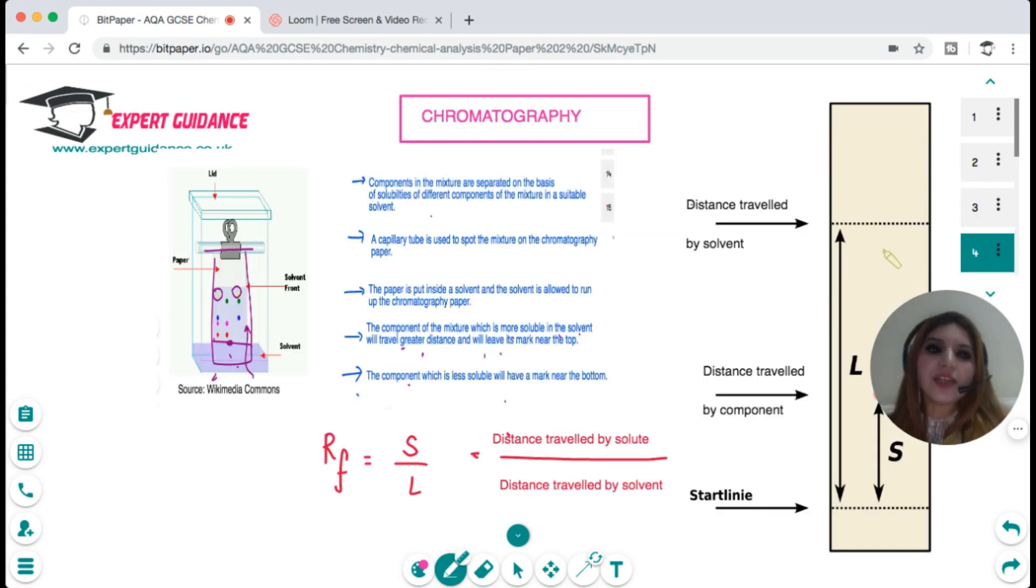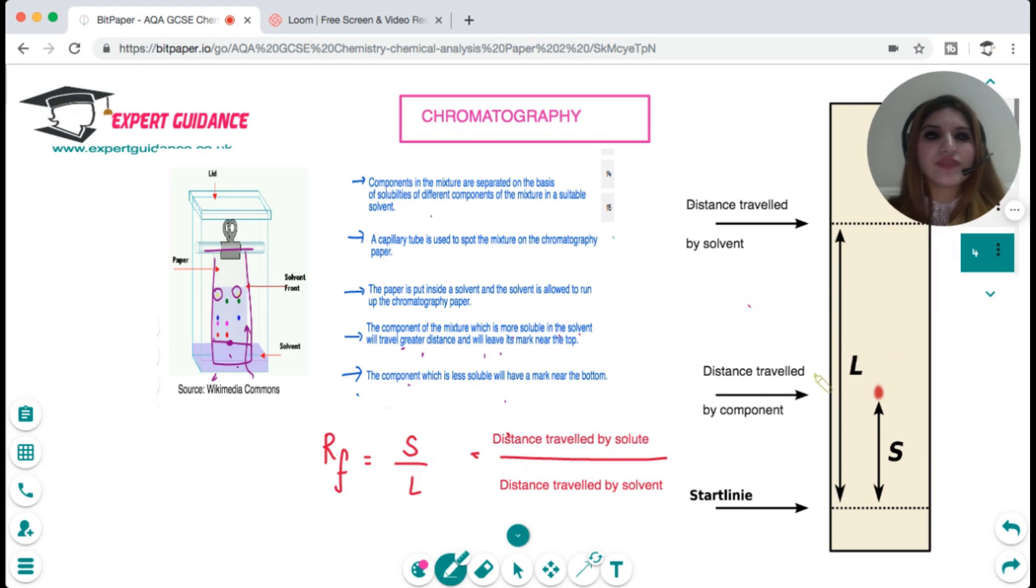Now there's another way where you can find the different components of a substance by chromatography. We discussed that a little bit in paper 1. In chromatography the components in a mixture are separated on the basis of solubilities of different components in a suitable solvent.